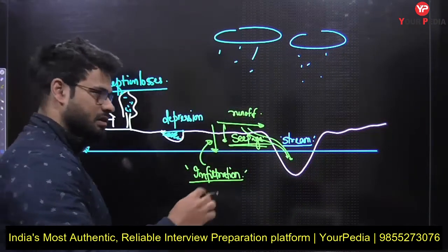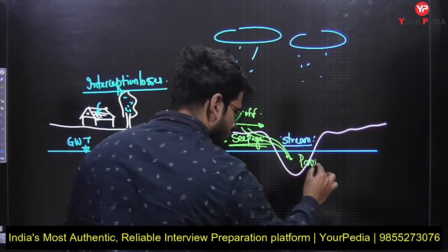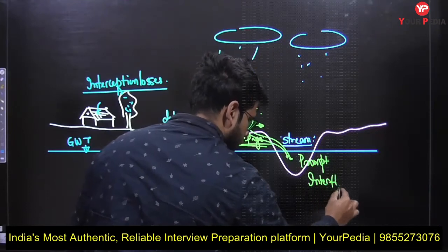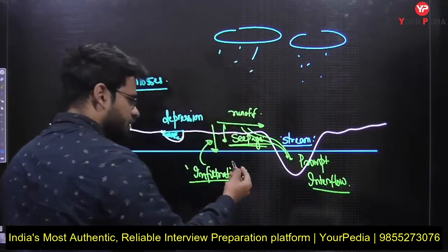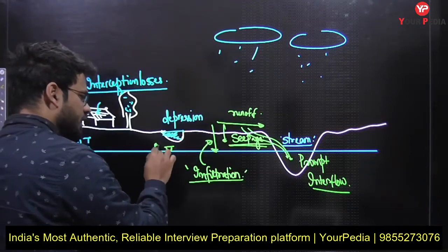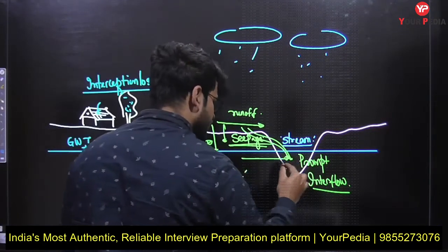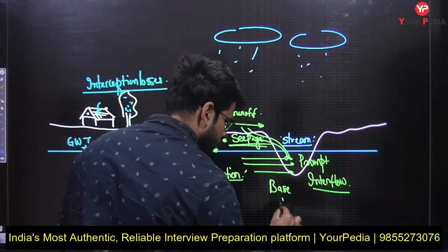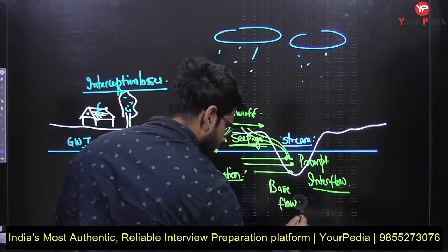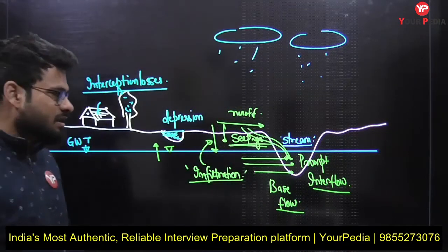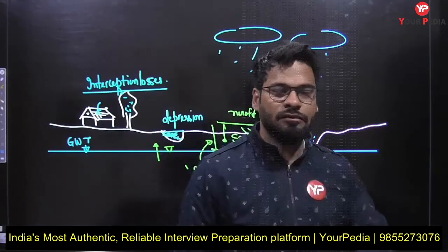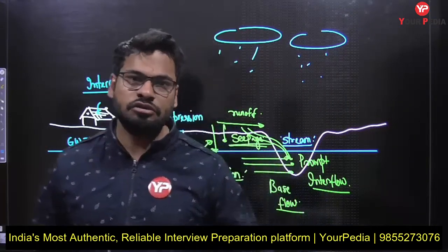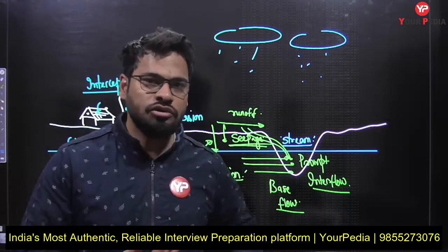When water does not reach the groundwater table, it is called prompt interflow. When this water rises because of infiltration and contributes water into the stream, this is called base flow. You need to know all three things: what is interflow, what is base flow, and what is infiltration.